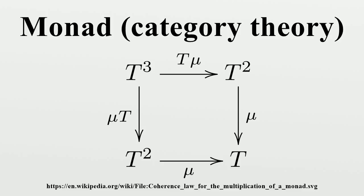Every monad arises from some adjunction, in fact typically from many adjunctions. Two constructions introduced below, the Kleisli category and the category of Eilenberg-Moore algebras, are extremal solutions of the problem of constructing an adjunction that gives rise to a given monad.